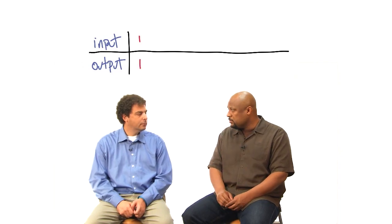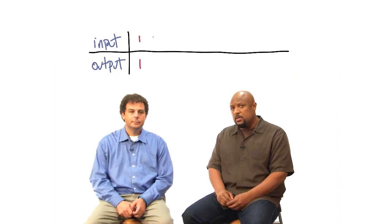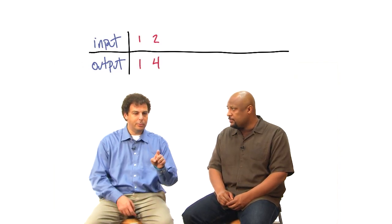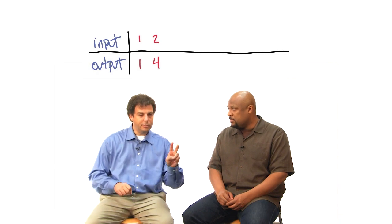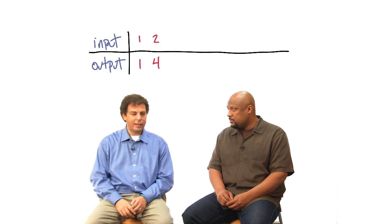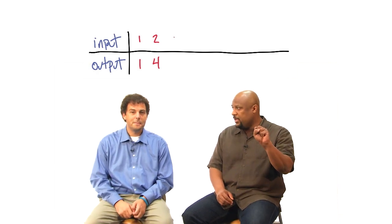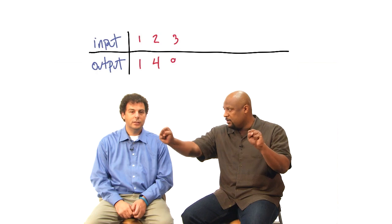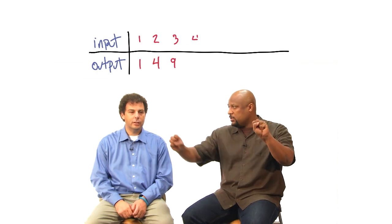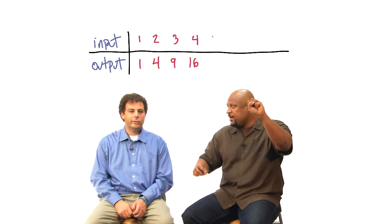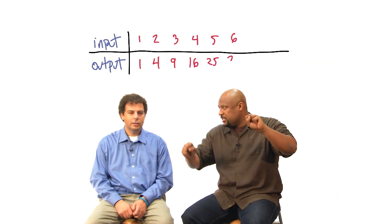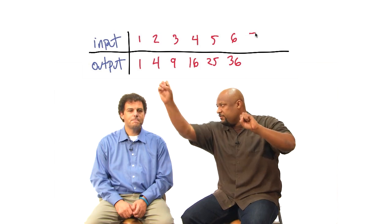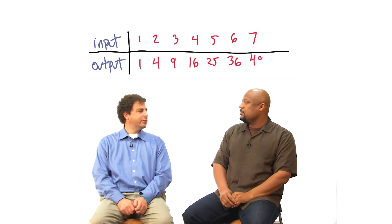One, one. Is one the input and one the output? Yes. And two the input, four the output? Correct. I think I'm on to you. Three, nine. Four, sixteen. Five, twenty-five. Six, thirty-six. Seven, forty-nine.